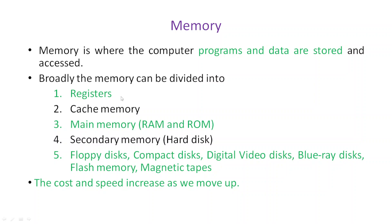Registers are inside the CPU; some cache may be inside the CPU chip or between RAM and CPU. The cost and speed increase as we go up the memory hierarchy, while size increases as we go down. Registers store only a few bytes, whereas DVDs and similar media can store large amounts in terms of gigabytes.